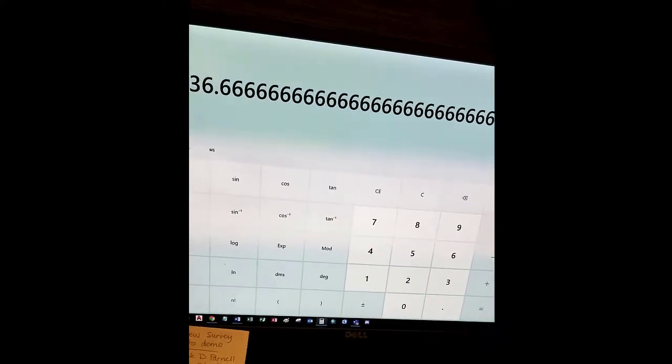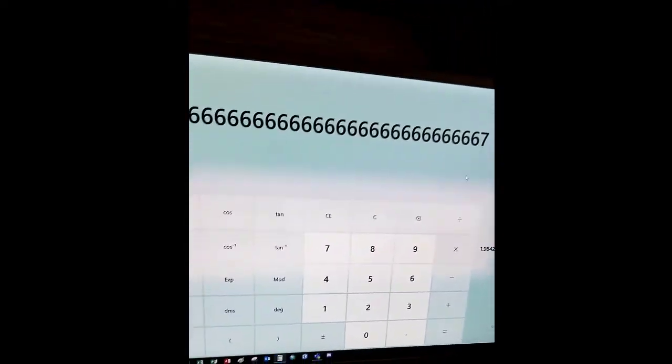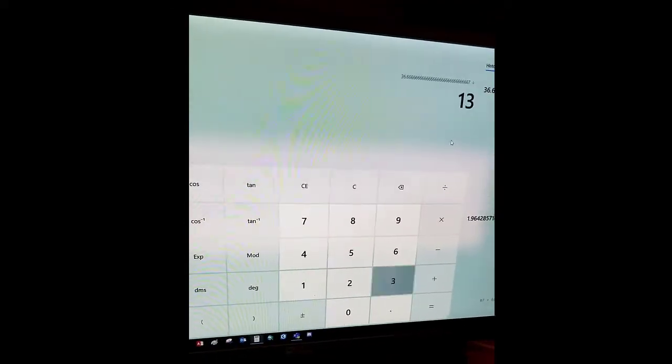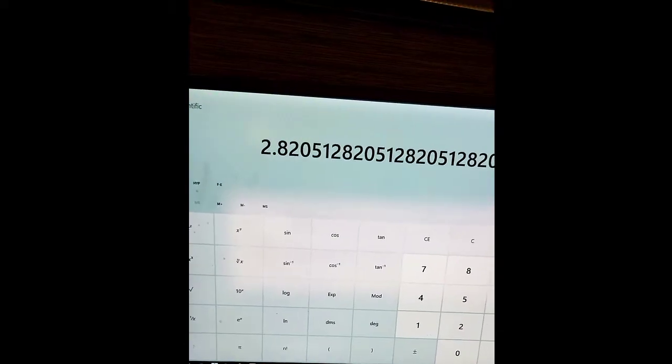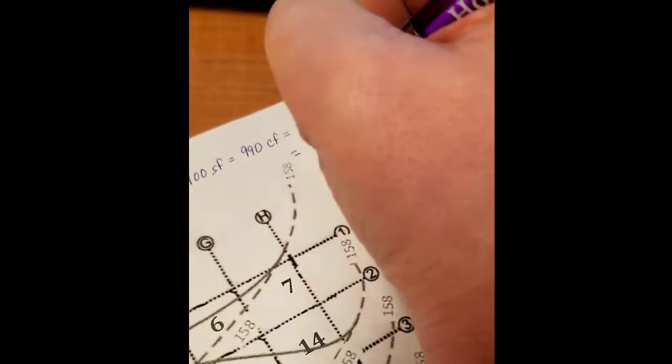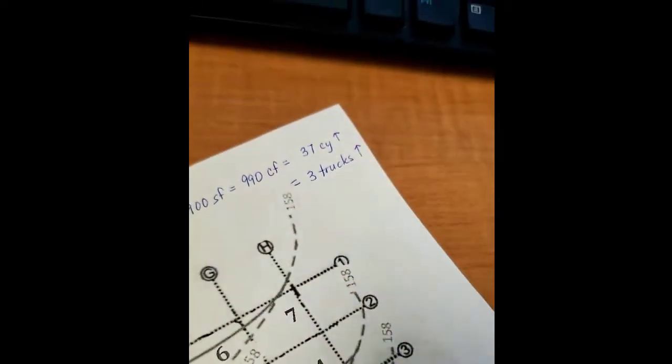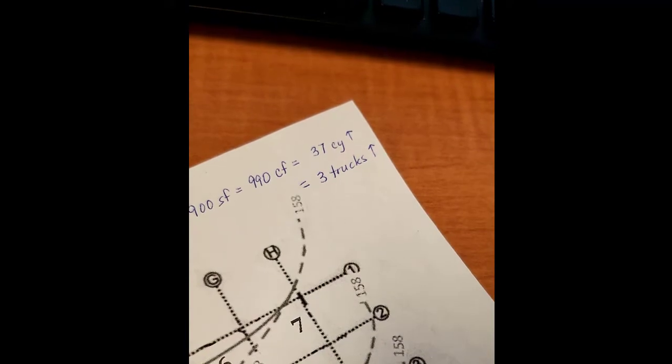In case, maybe instead of asking you for cubic yards, I ask you for trucks. So divided by 13 is 2.82. Well, we can't have 0.82 of a truck, so that's going to be three trucks. Again, I'm putting the arrow on this demo to show you that I have rounded it up. You would not try and insert an arrow in your answer on Blackboard.